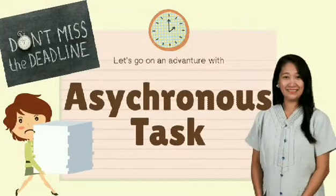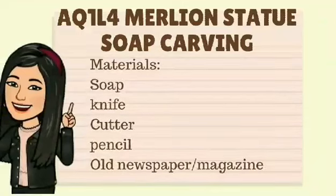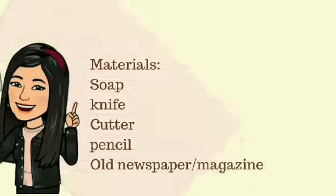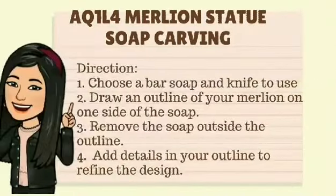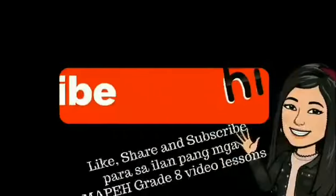Our asynchronous task: Lesson code AQ1L4 — Merlion Statue Soap Carving. Materials needed: soap, knife or cutter, pencil, and old newspaper or magazine. Please take note of the directions and observe precautionary measures.